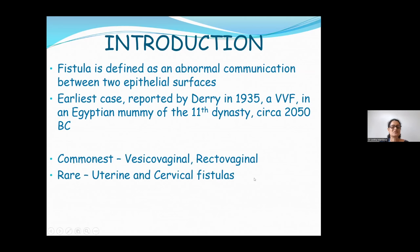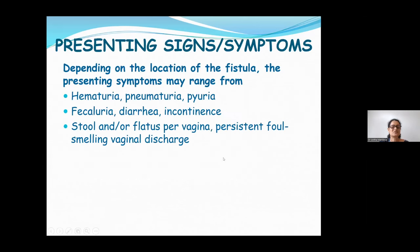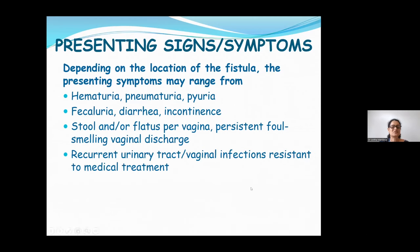The commonest fistulas we see in practice are vesicovaginal and rectovaginal fistulas. In malignancies, uterine and cervical fistulas are not uncommon. Patients usually present with hematuria, pneumaturia, or pyuria. If the alimentary tract is involved, they present with fecal urea, diarrhea with incontinence, or foul-smelling vaginal discharge and recurrent UTIs. A non-specific but important finding is weight loss.